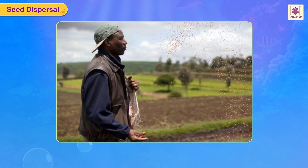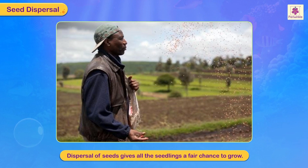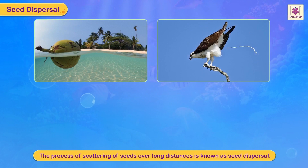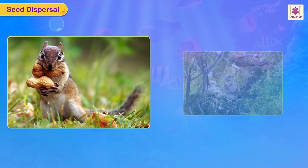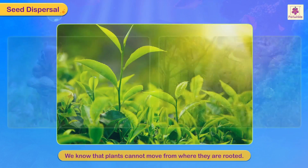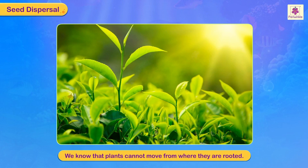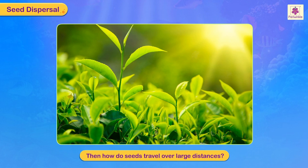Seed dispersal: dispersal of seeds gives all the seedlings a fair chance to grow. The process of scattering of seeds over long distances is known as seed dispersal. Nature has brought about seed dispersal so that more and more plants can grow over large distances and all living things can get food and other benefits from them. Since plants cannot move from where they are rooted, how do seeds travel over large distances?